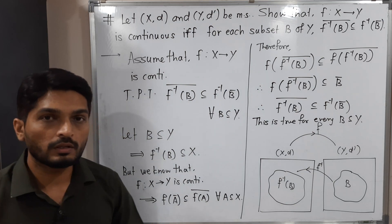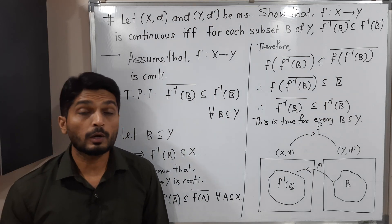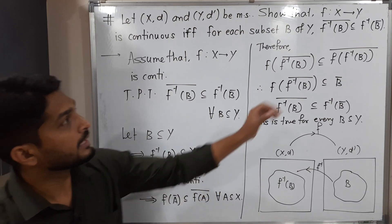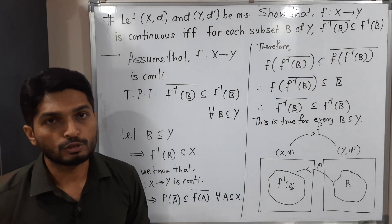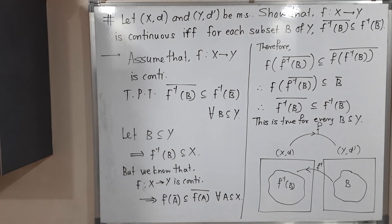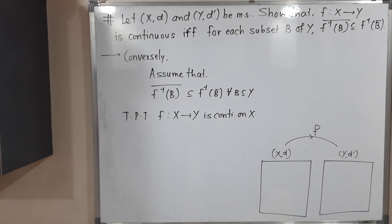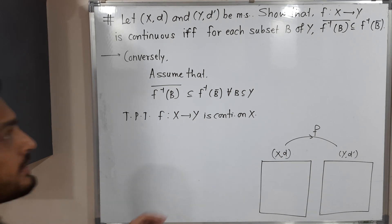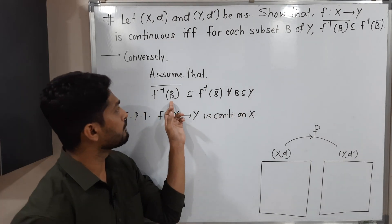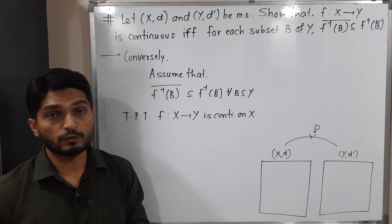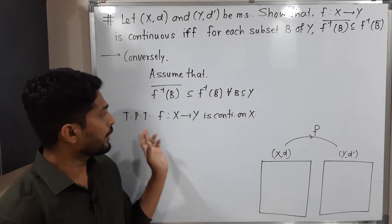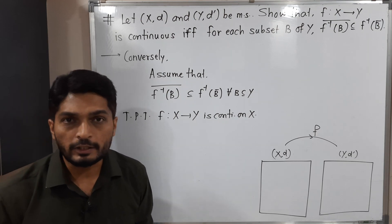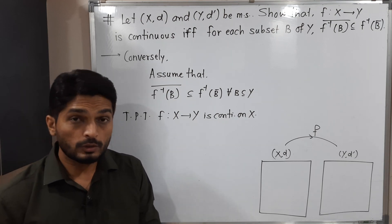We have proved the first half of the theorem. Now conversely, we assume that f⁻¹(B)̄ ⊆ f⁻¹(B̄) holds for every subset B of Y, and we have to prove that f is continuous on X.